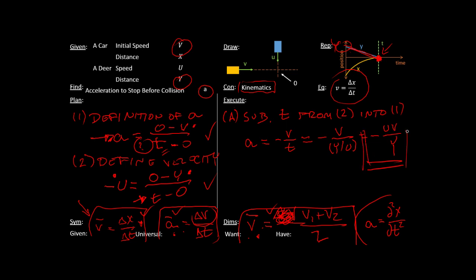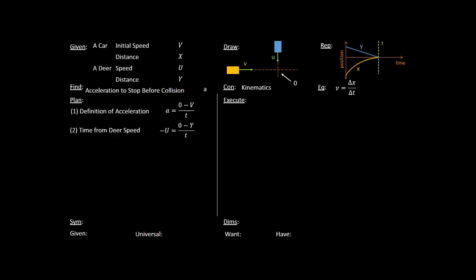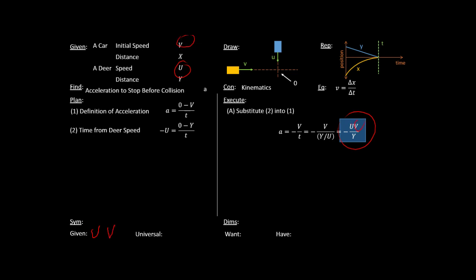Now I want to check that answer. First, check these symbols. I've got minus UV over Y as my answer. Is U up here? Yes — U is the deer speed; we're given that. Is V up here? Yes, it's a given. Is Y up here? Yes. And notice we didn't have to use X — that's okay; I'll give you problems where you don't have to use everything, because recognizing that is part of your problem-solving skills. We also don't have any universal constants — no gravity, no material constants. That's perfectly fine.